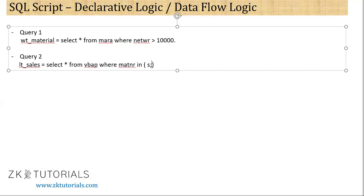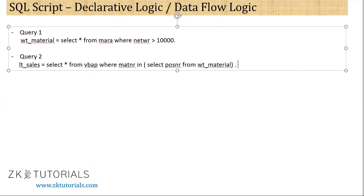Select MATNR — or let's say, POSNR — from WT material. So those are simple select queries.